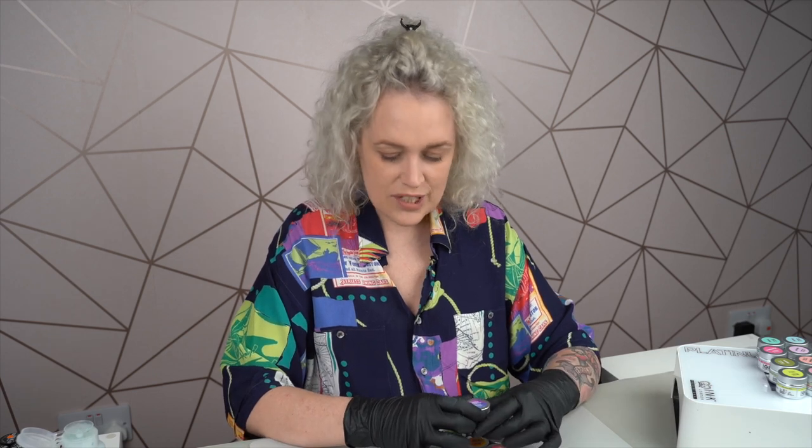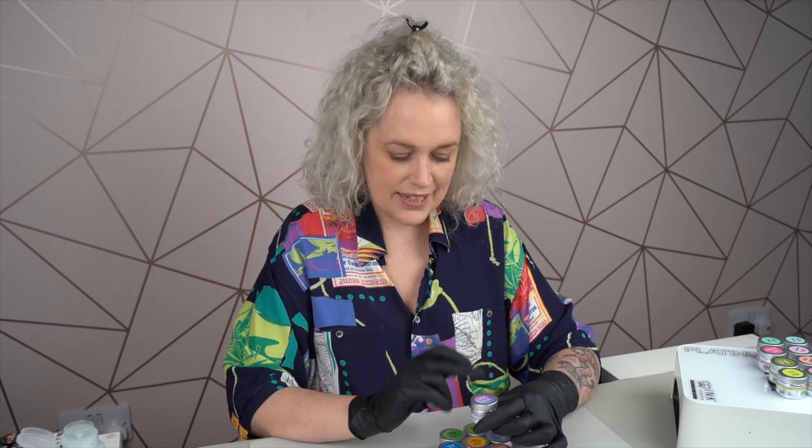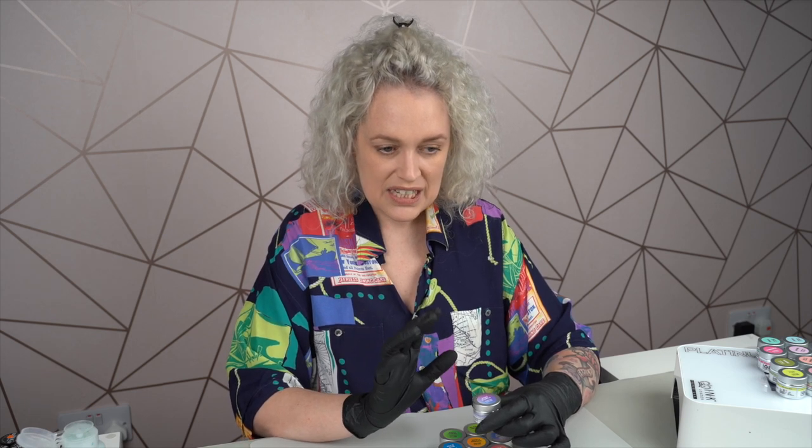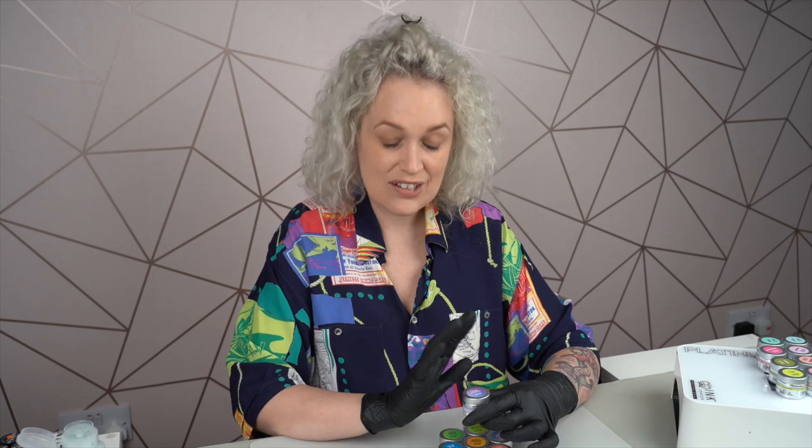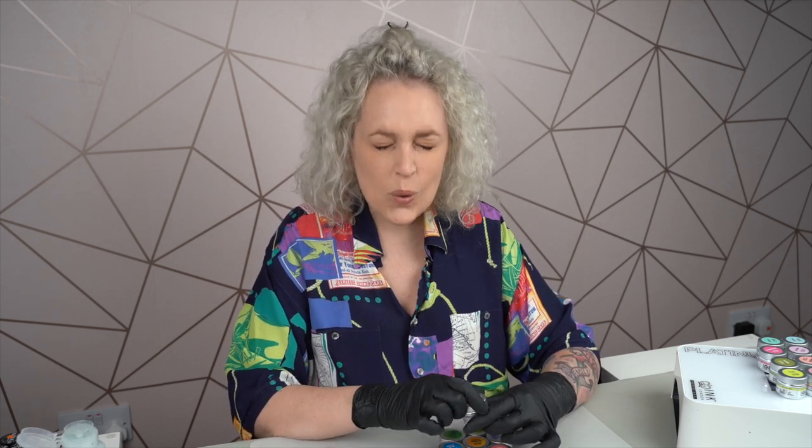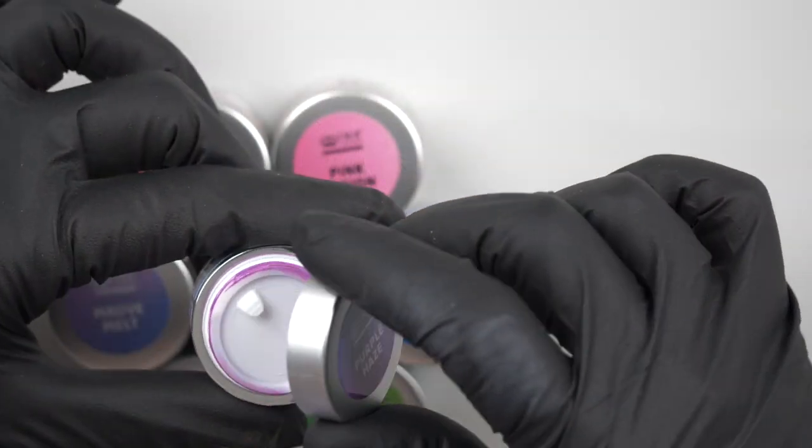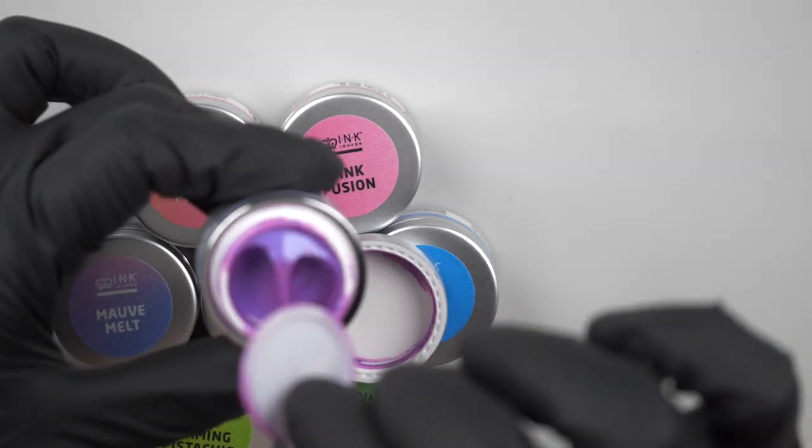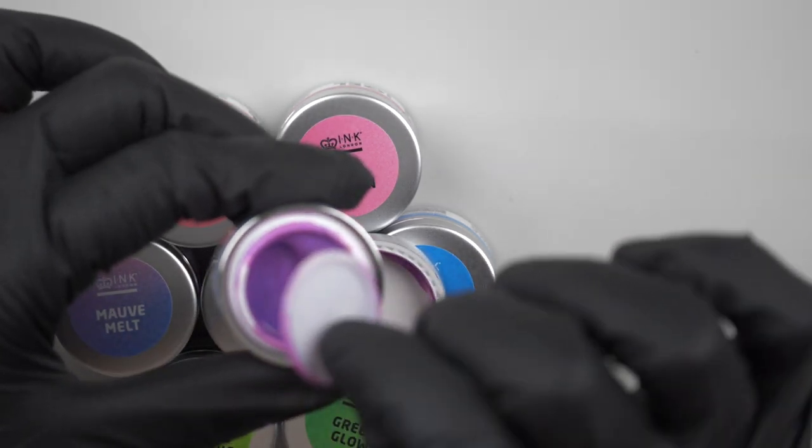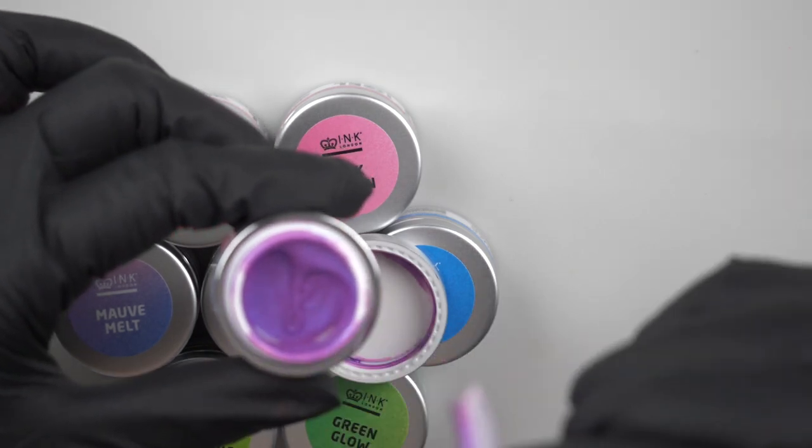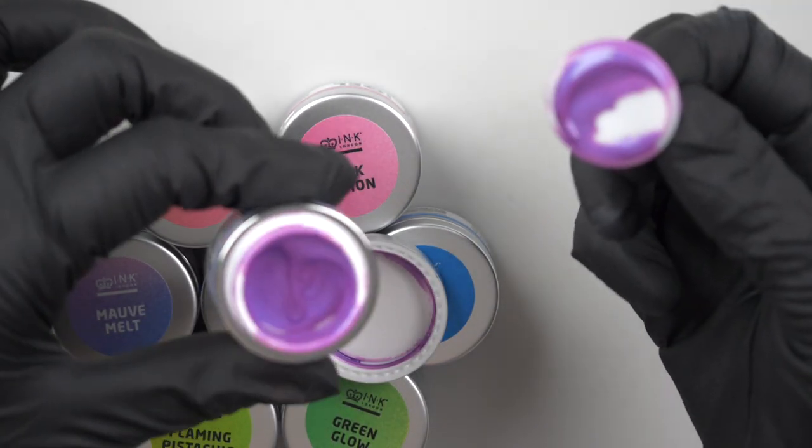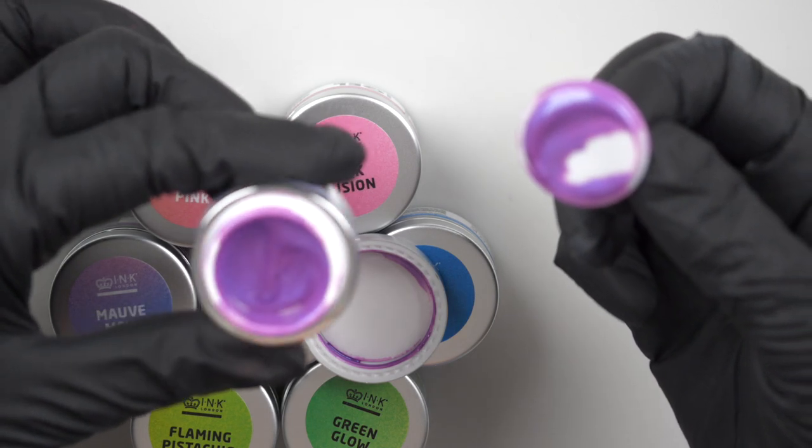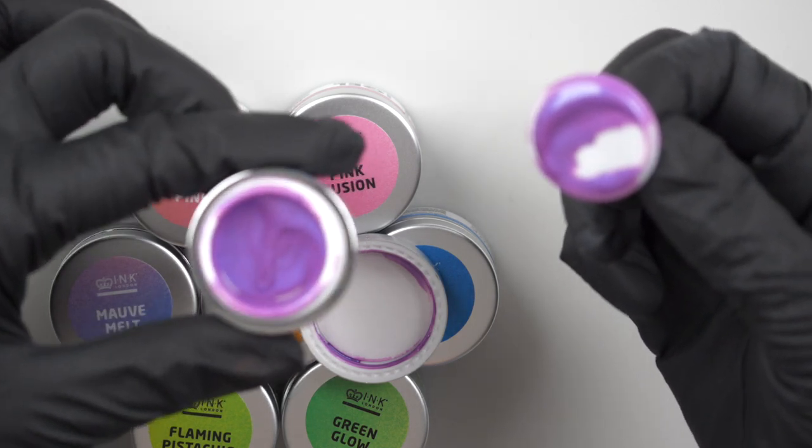First one: Purple Haze. These all have a super shimmer in them and they're kind of pearlized. When you get them in a different light and the light catches them in a different way, they'll shine a different color. They're beautiful - I don't know how well it'll come across on camera, but we'll see. Hopefully you can see that - it's kind of a purple going into a blue. They're really like chameleon type gels.